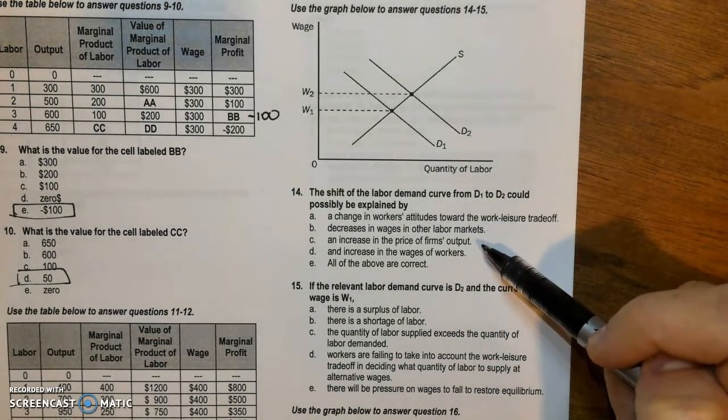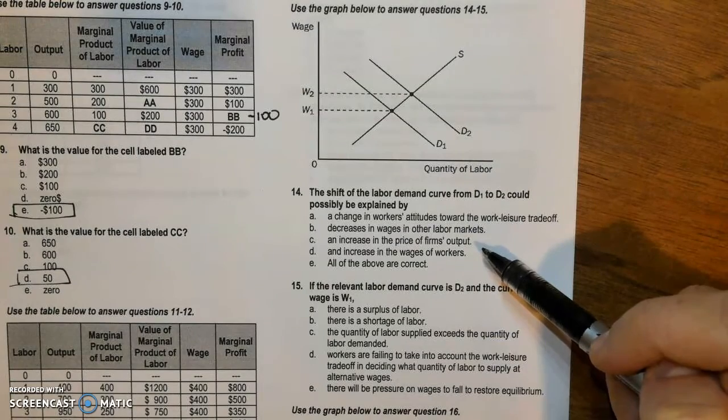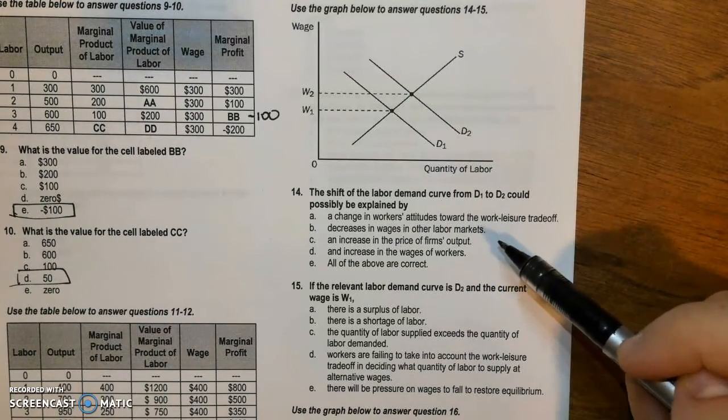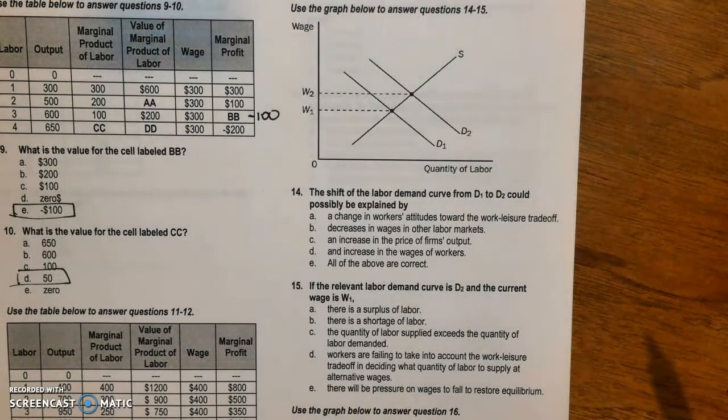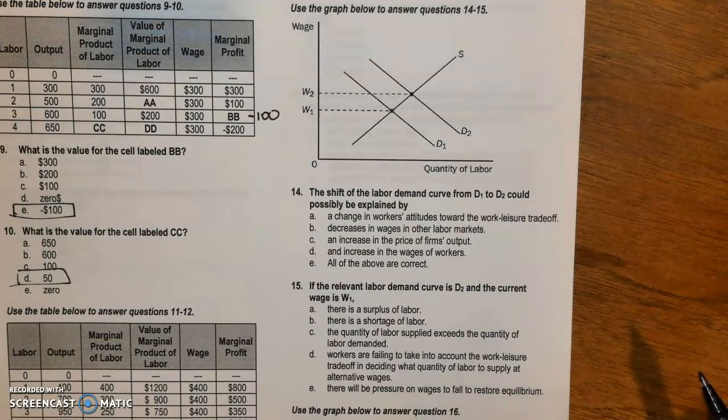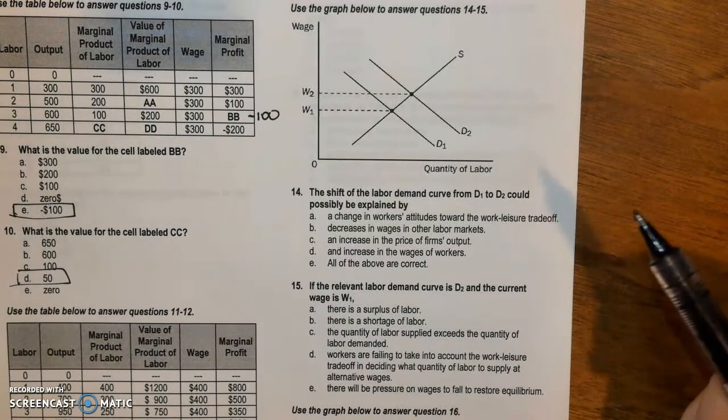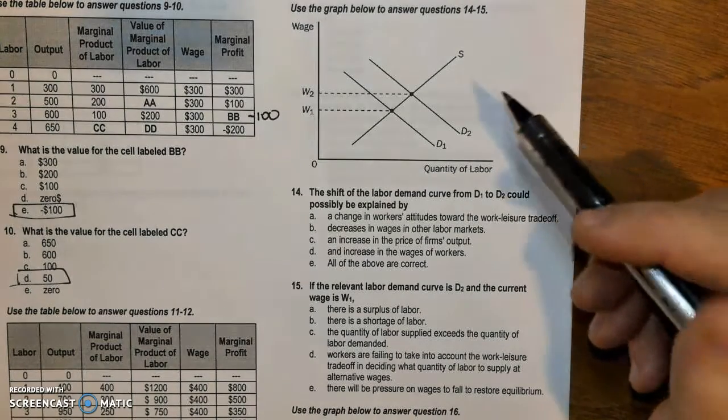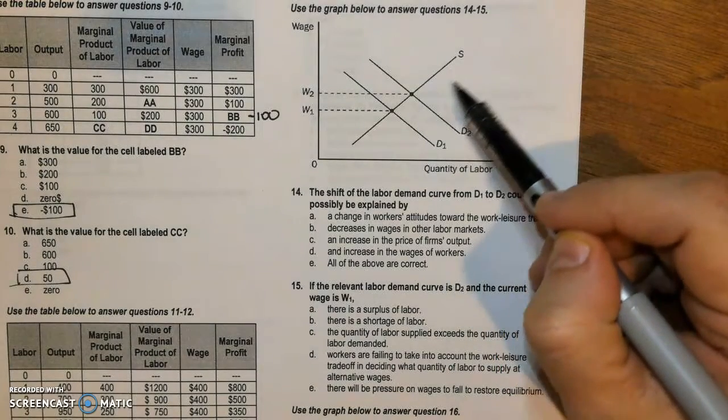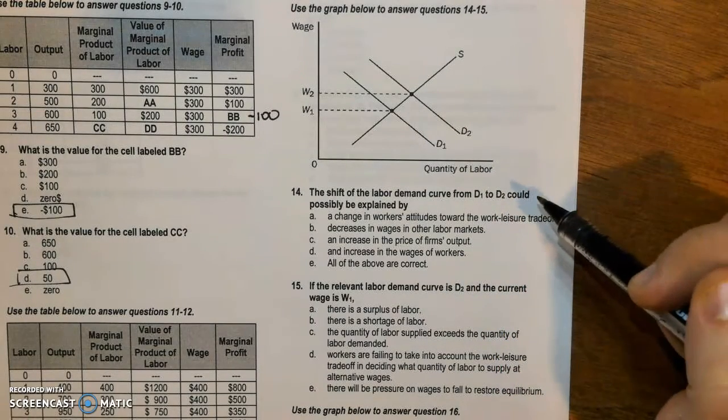An increase in the price of the firm's output. So if the firm was able to get better, higher prices for a good, that would lead them to shift their marginal revenue product, which is equivalent to demand, and thus they would demand more workers. And so C is true.